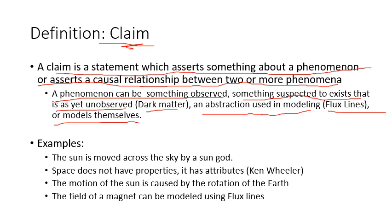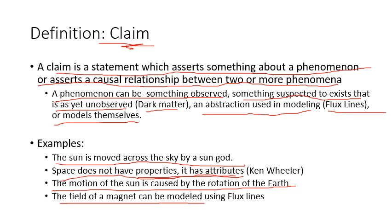Let me give examples. The sun is moved across the sky by a sun god. That's a claim. Space does not have properties. It has attributes. That is Ken Wheeler's claim. He claims that comes from Tesla. I doubt very seriously. If Tesla made this remark, then Tesla is an imbecile. This is, properties and attributes are essentially a synonym. It's like, oh, you're not a ghost, you're a spirit. Oh, you're not an undertaker, you're a mortician, like that commercial for Twixt. Another claim. The motion of the sun is caused by the rotation of the earth. The field of a magnet can be modeled using flux lines. These are all claims. Just claims.